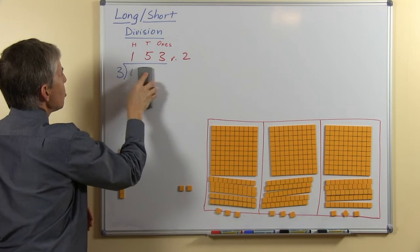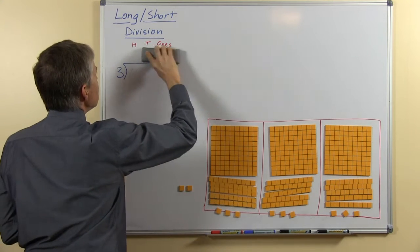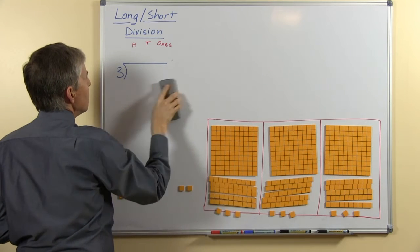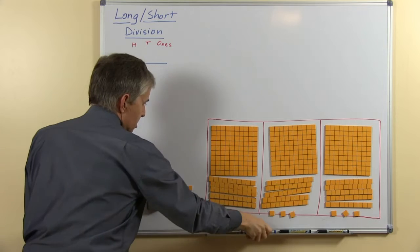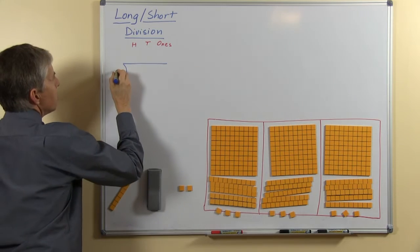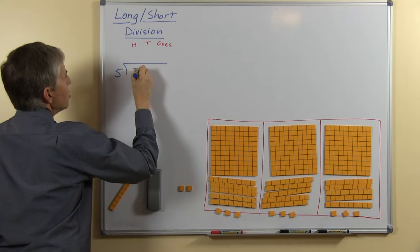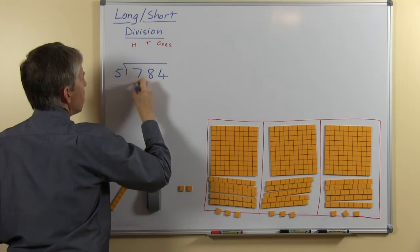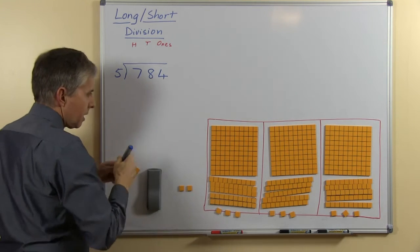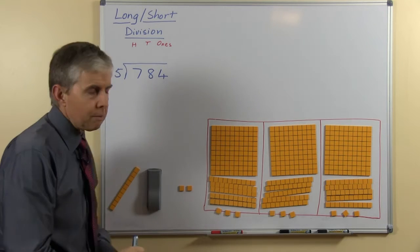So I'm going to show you another question now, but we're going to do it using short division. So I'm going to change the numbers and I'll just put a question here, so let's divide by 5 and we'll do 784, ok. And we won't be using the blocks this time.